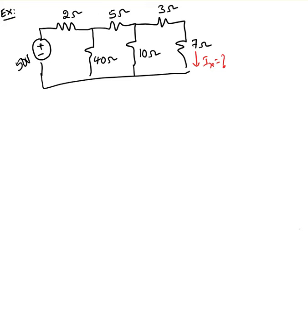Here is another example of finding Ix by using the series-parallel combination method. This example also looks like a ladder circuit. For any circuit — not only ladder circuits — always start solving from the other end of the source or the other end of the open terminals.